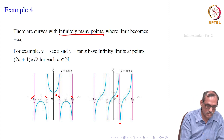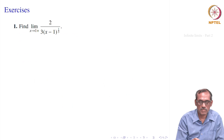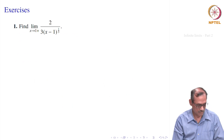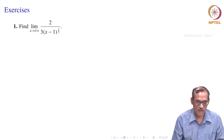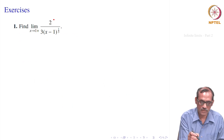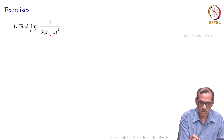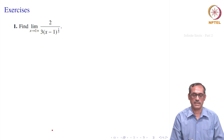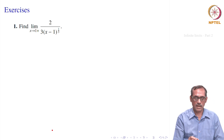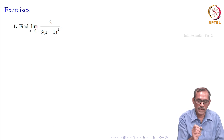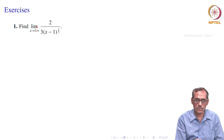Maybe we should solve some problems now. This is the first problem: we have the function 2 divided by 3 times (x - 1) to the power 1/3, and we are asked to find the limit as x goes to 1 from the right.